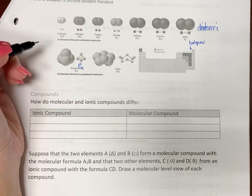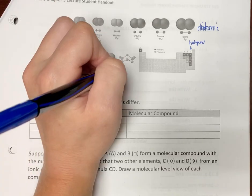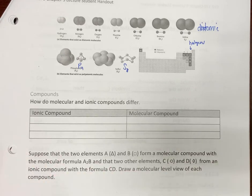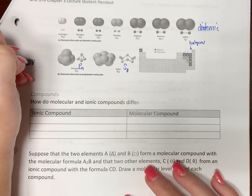Sulfur actually exists as S8 out in nature. Don't worry about those. Those are just called polyatomic.